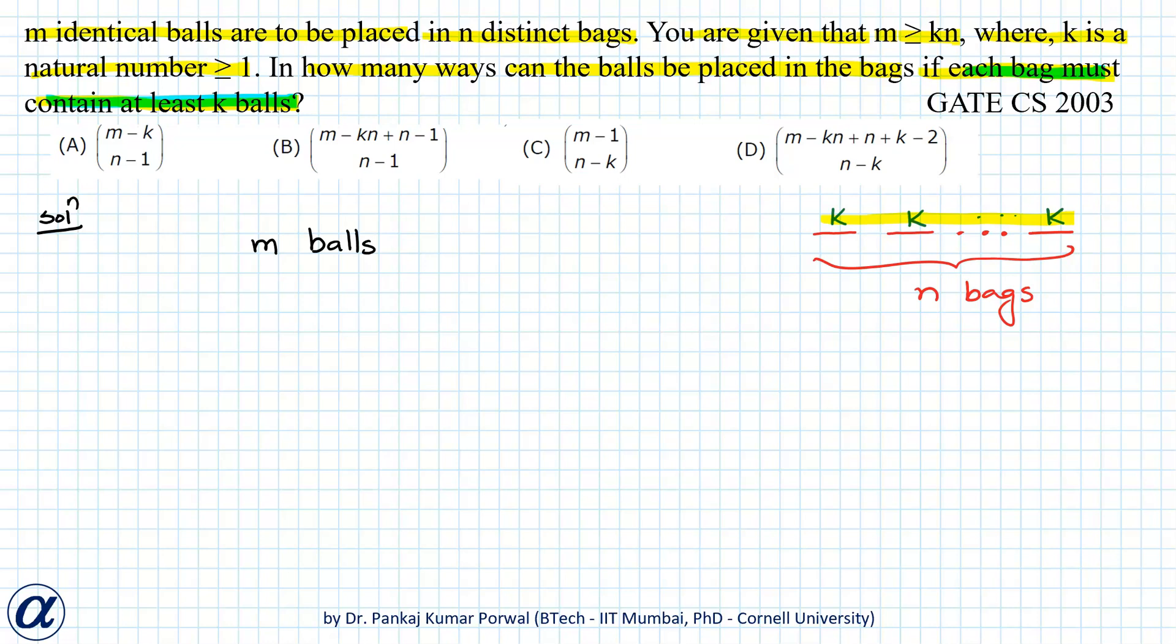with m minus kn balls. Because m is greater than or equal to kn, m minus kn will be a non-negative number. Now we want to find the number of ways of placing these m minus kn identical